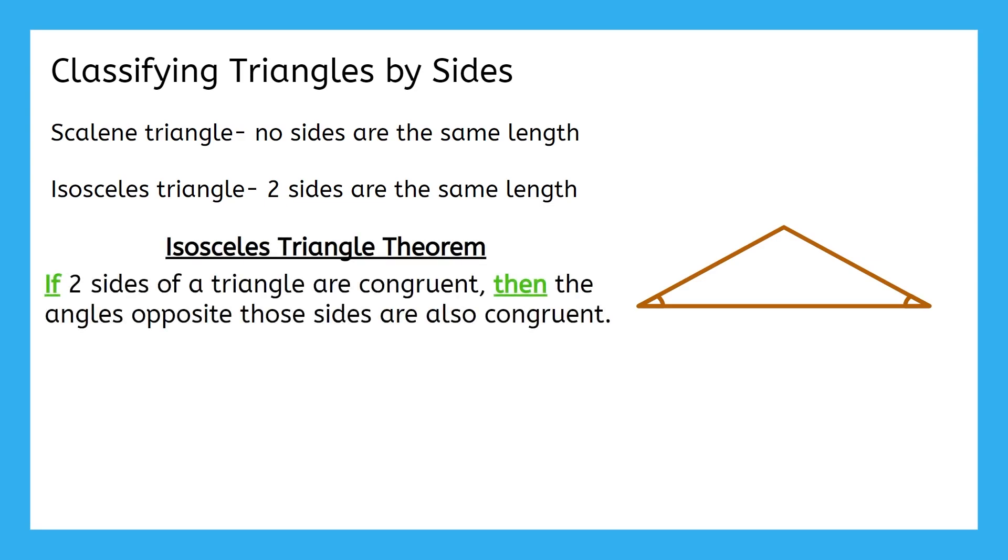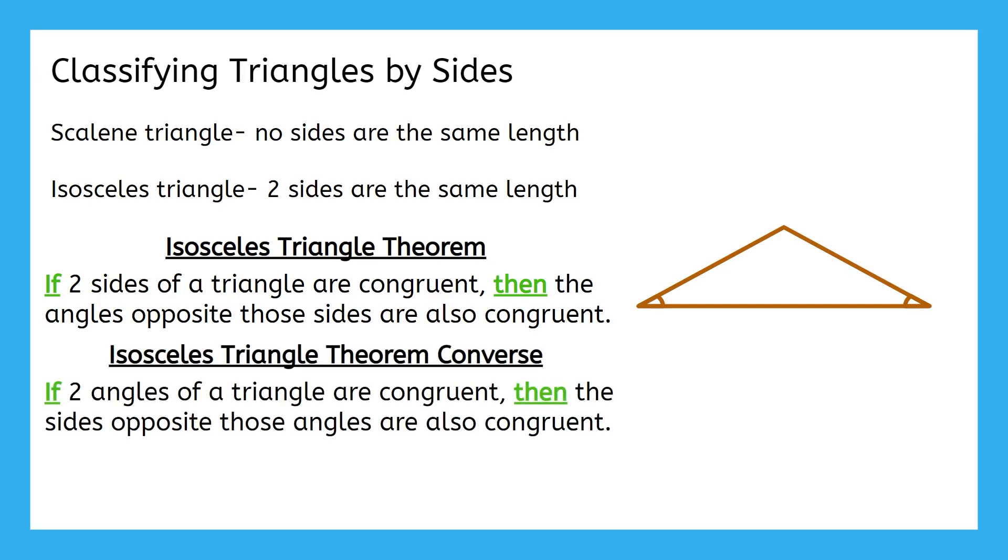The isosceles triangle theorem states that if two sides of a triangle are congruent, then the angles opposite those sides are also congruent. Or maybe the isosceles triangle theorem converse would be more helpful for our situation. A converse takes the original if-then statement and flips it. You'll learn more about converses in the next unit, but the real question here is which of these statements help us determine a relationship between the sides of our triangle. Pause the video and determine which statement is helpful to our situation.